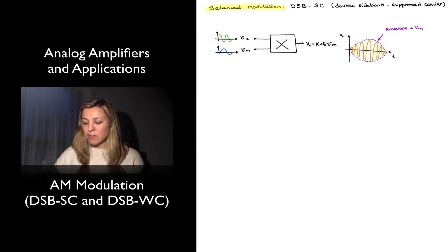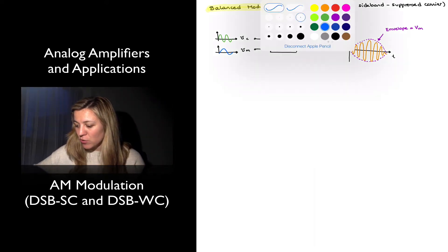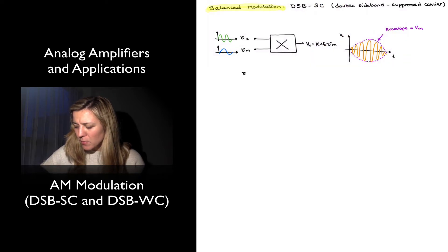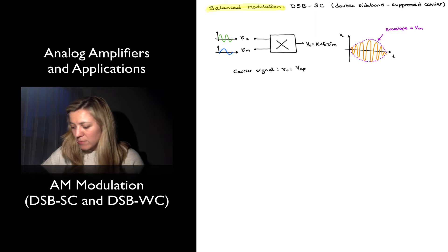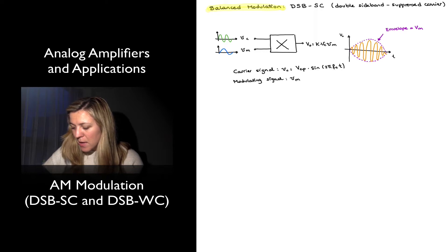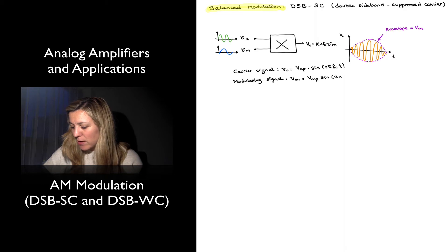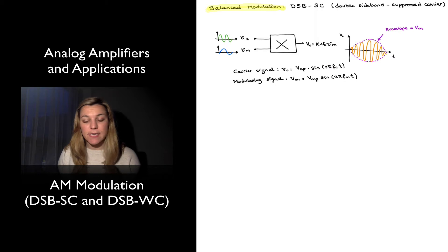I have my analog multiplier with my carrier signal and modulating signal as the inputs, and the output is going to be proportional to the product of the two. Assuming sinusoidal signals, I can write my carrier signal as Vc = Vcp · sin(2π·Fc·t), and my modulating signal as Vm = Vmp · sin(2π·Fm·t).